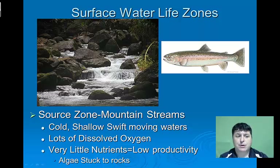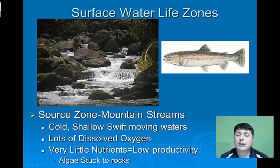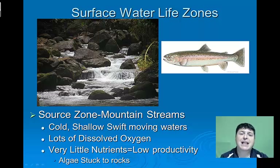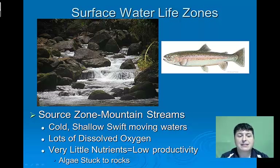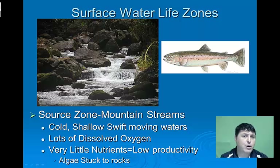The source zone consists of mountain streams with cold, shallow, but swift-moving waters. As a result, there is a lot of dissolved oxygen — the movement of the water increases oxygen present, and cold water allows for greater dissolving of oxygen. Unfortunately, there's not a lot of places for algae to grow, and very little nutrients because of this lack of productivity. Trout are a great fish found in this life zone due to their need for cold, oxygen-rich water.